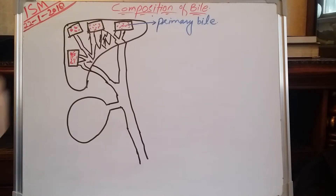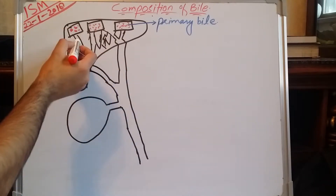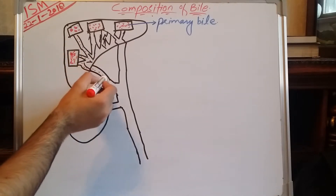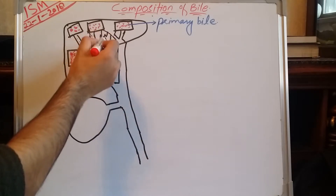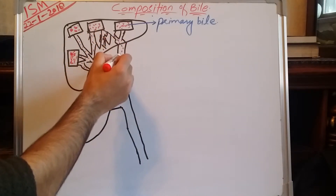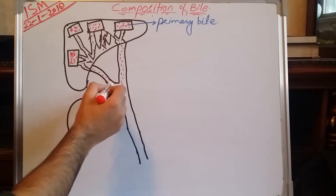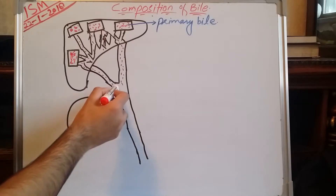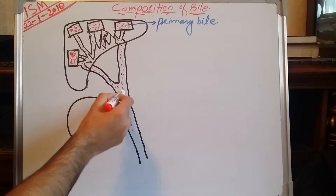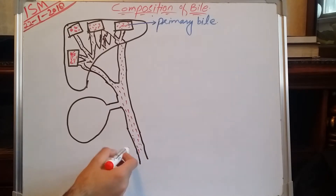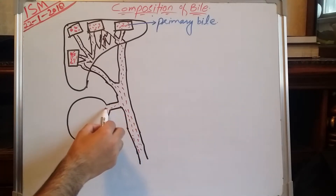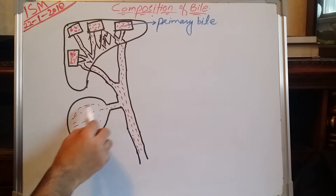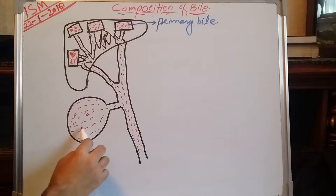After synthesis, bile starts to move down through the smaller duct tubes. If the bile is required for the process of digestion, it moves downward to the duodenum. If it is not required, it will be stored in the gallbladder.